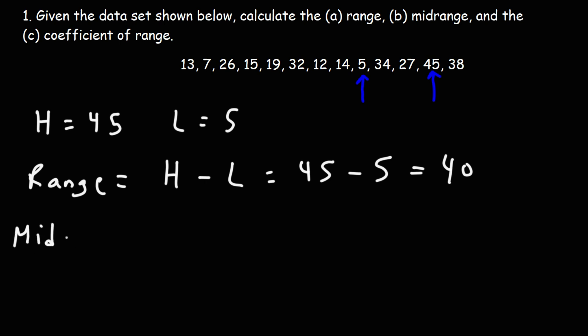Now to calculate the midrange, the midrange is basically the average of the highest and the lowest number. So we need to add the two numbers, get the sum, and then divide by 2. So it's going to be the average of 45 and 5. 45 plus 5 is 50. 50 divided by 2 is 25. So 25 is the midrange, 40 is the range.